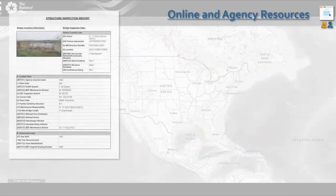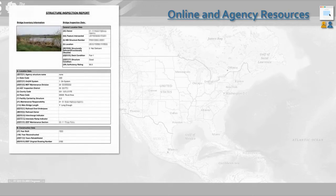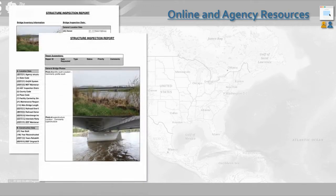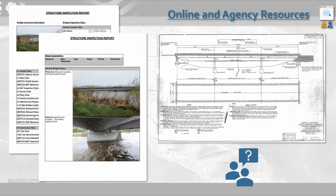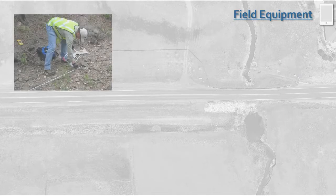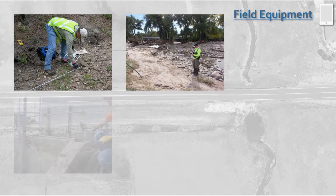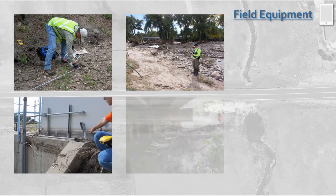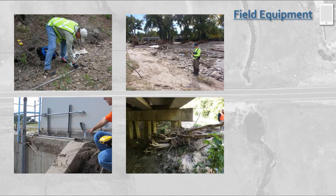In addition to online data, agencies will typically have information for existing structures, and you can request inspection or maintenance reports, as well as plan sets if they are available. Agency project managers, engineers, or maintenance staff can be invaluable resources for helping you understand a project site. As you prepare for your site visit, create a list of what you want to capture. The field forms mentioned earlier are helpful guidance at this point. Typical data to collect includes measurements, field form requested data, high water marks, structure photos, site photos, or damage.